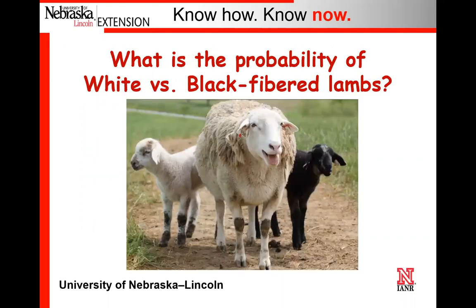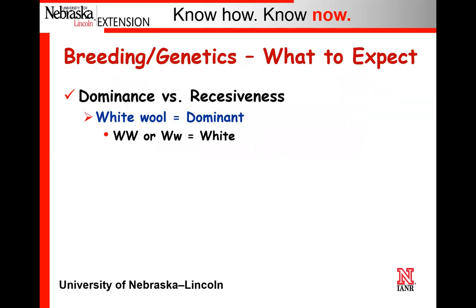When we talk about dominance versus recessiveness, this is most easily done if we discuss white versus black fibered sheep. White happens to be a dominant trait; black happens to be a recessive trait. So when we talk about a white animal, they may be homozygous dominant (big W, big W) or they could be heterozygous (big W, little W). Either way, they're going to have a white wool color. Black wool is a recessive trait, so they're going to have to be homozygous recessive (little W, little W) to be black.